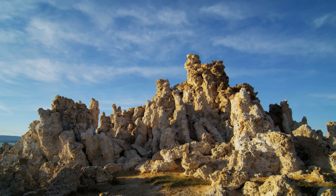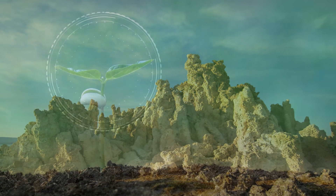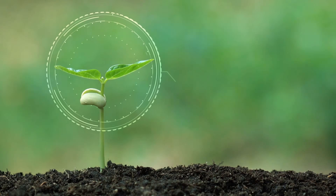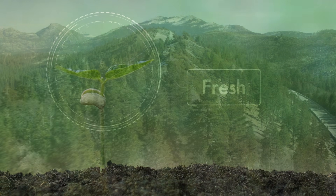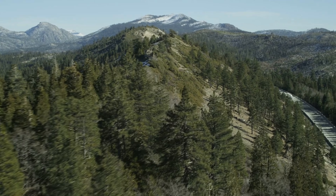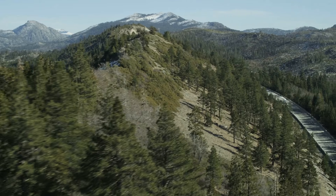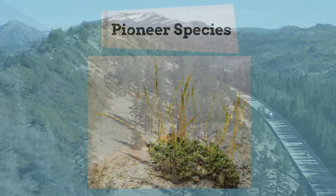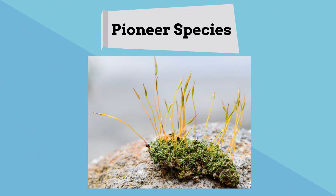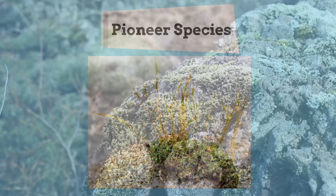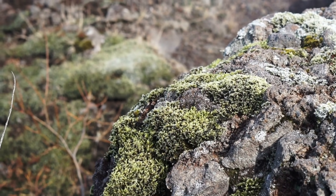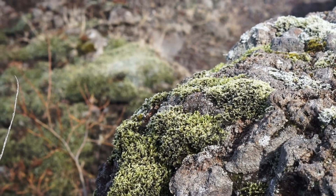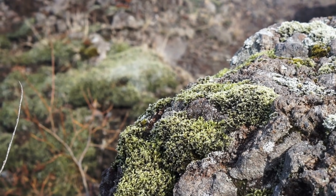Over time, dirt is formed, plants begin to grow, and a forest or a grassland may return. The first species that colonize this new land are called the pioneer species. Lichen and moss are many times pioneer species.